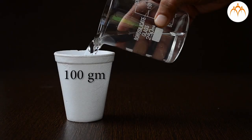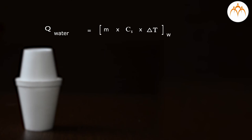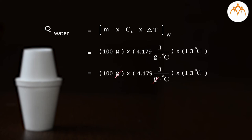Mass of water is 100 grams. Heat energy gained by water is 100 grams multiplied by 4.179 joules per gram degree Celsius multiplied by 1.3 degrees Celsius. It is equal to 543 joules. Water received this energy from aluminum.